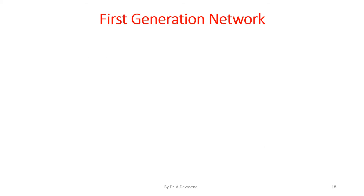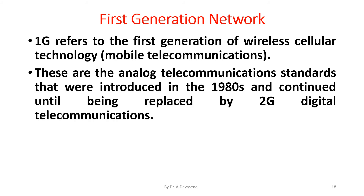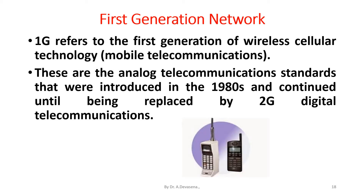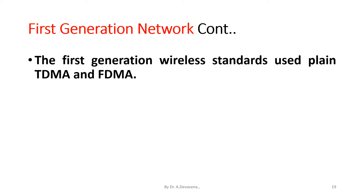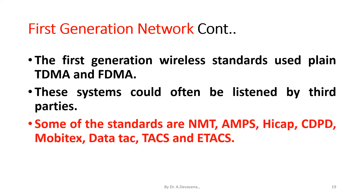1G refers to the first generation of wireless cellular technology. These are the analog telecommunications standards introduced in the 1980s and continued until being replaced by 2G digital telecommunications. The first generation standards used plain TDMA and FDMA, and these systems could often be listened to by third parties. Some of the standards include NMT, AMPS, HICAP, CDPD, Mobitex, DataTAC, TAX, and ETAX.